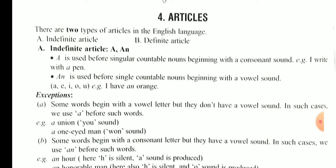ये तो हैं हमारे vowels - a, e, i, o, u। और इनके साथ teacher ने बोला था जब आप second class में आये थे कि जहां पर भी ये vowels के words दिखाई देंगे, जिसका first alphabet इन पांच vowels में से एक होगा तो आपने 'an' लगाना है। और बाकी जो alphabets हैं उनको हम कहते हैं consonant, और consonant के साथ आपने use करना है 'a'।